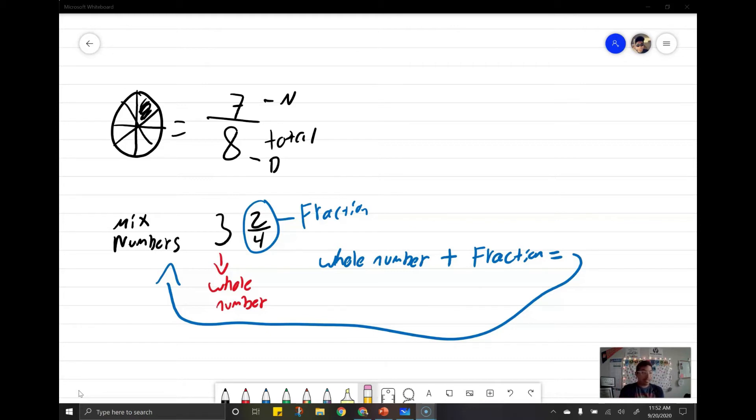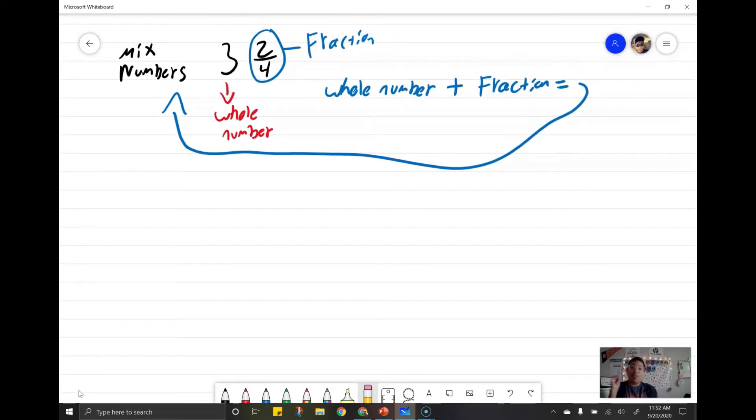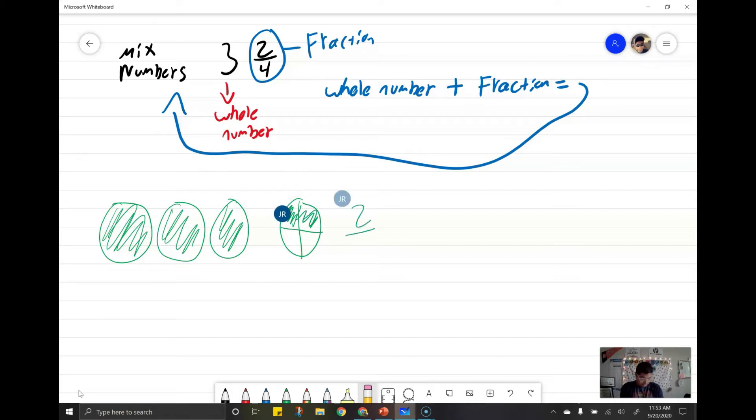Let's see what that looks like in pictures. 3 and 2 fourths. So my 3 is my whole number. So that means I have 3, 4 things. And then I have one other pizza that's cut up into how many slices? Four. Good. And how many are already eaten? Two. Good. That's 2 fourths. And then this is 3. So together, that makes it 3 and 2 fourths, and that's called a mixed number.